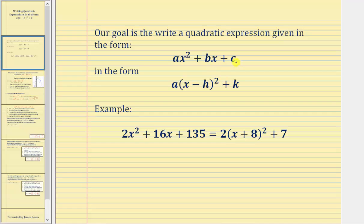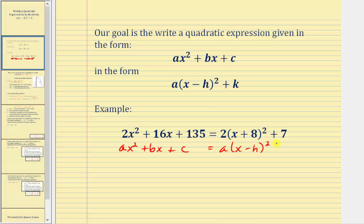sometimes referred to as general form, and asked to write the expression in this form, often referred to as standard form, vertex form, or graphing form. Looking at our example below, notice how on the left we have an expression in the form AX squared plus BX plus C, and on the right we have the same expression written in the form A times the quantity X minus H squared plus K.